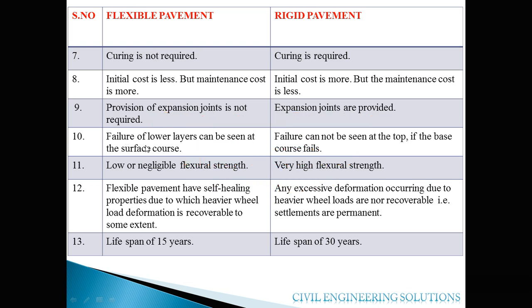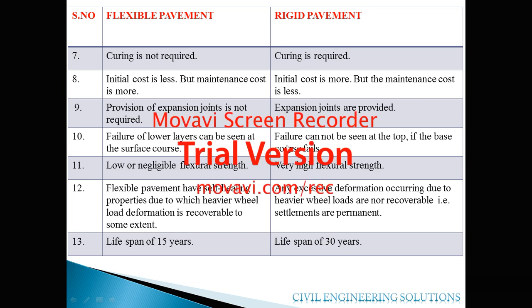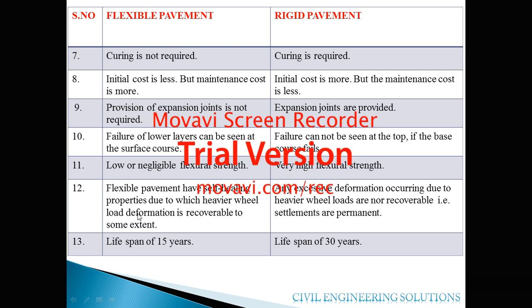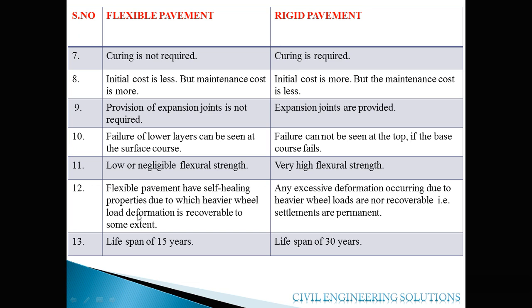In flexible pavement, if failure occurs in any lower course, it can be seen at the top surface course. But in rigid pavement, if the base course or subgrade course fails, that failure cannot be seen at the top surface of the rigid pavement. In flexible pavement, the material is flexible and has negligible flexural strength, whereas rigid pavement is rigid and has very high flexural strength. Flexible pavement has a self-healing property, due to which deformation caused by heavier wheel loads is recoverable to some extent.